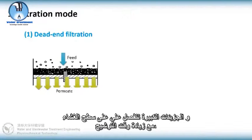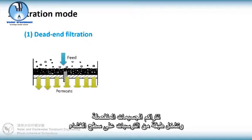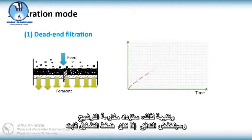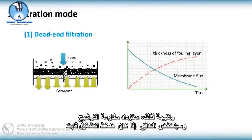With the increase of filtration time, the rejected particles accumulate and form fouling layers on the membrane surface. Consequently, filtration resistance would be increased and the flux would be reduced if the operating pressure is fixed.